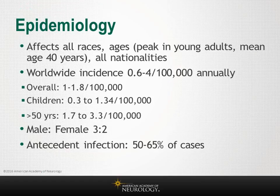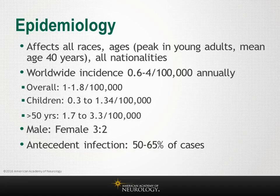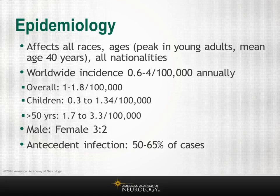Guillain-Barré syndrome is an acute monophasic immune-mediated polyradicular neuropathy with a mean age of onset of about 40 years that affects slightly more males than females. It affects persons of all ages, races, and nationalities. The worldwide incidence has been reported at 0.6 to 4 per 100,000 annually. Children are affected slightly less frequently, whereas adults over 50 have a slightly greater incidence.